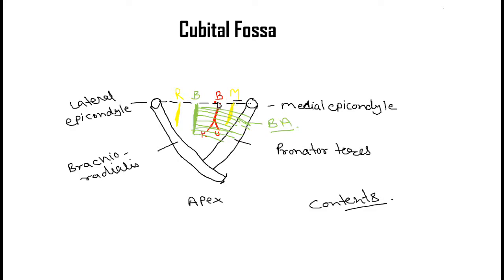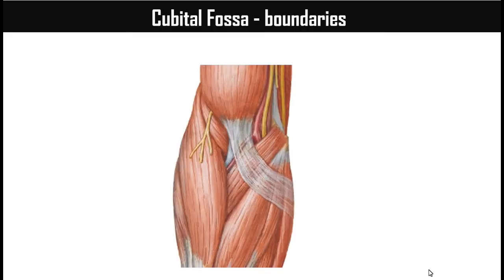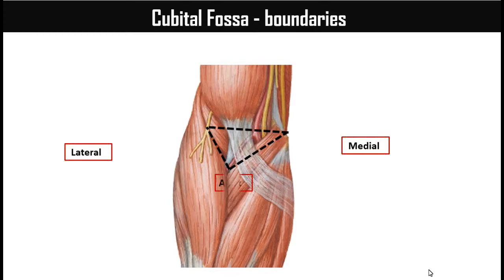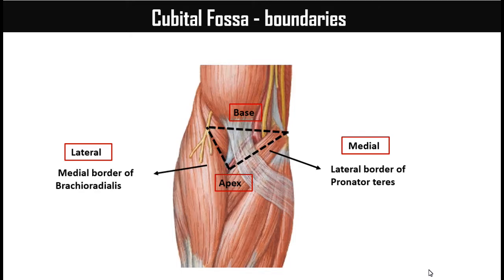Medial to lateral, we have the MBBR structure. To summarize the boundaries: the cubital fossa is in the front of the elbow. The medial boundary is the lateral border of the pronator teres, the lateral boundary is the medial border of the brachioradialis, the base is the imaginary line between the medial and lateral epicondyle, and the apex is the meeting point of the two muscles.